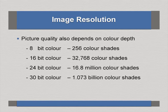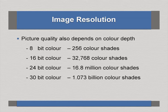Picture quality also depends on color depth. In an 8-bit color depth, about 256 color shades can be generated. With 16-bit color depth, about 32,000 colors are possible. At 24-bit, around 16.8 million colors, and at 30-bit color depth, almost 1 billion colors. Present-day computers can handle even 32-bit color shades, but using 32-bit color naturally increases the file size.